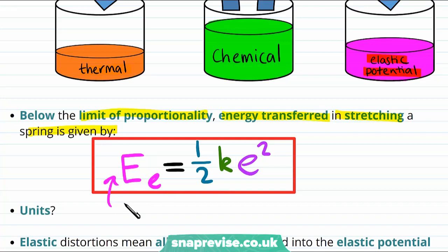And let's take a look at the units in this equation. Well, the elastic potential energy is an energy, so it's measured in joules. The spring constant has units of newtons per metre, and the extension is measured in metres.